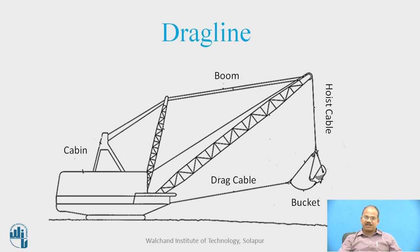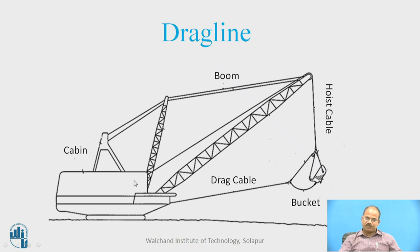This is a construction equipment well known as drag line. It basically consists of a bucket which drops down with the help of a hoist cable connected to the operating cabin. The bucket is also connected with the operating cabin via a drag cable, and the hoisting force as well as dragging force are both operated through the cabin. There is a boom to support these two forms of trusses which form the different parts of a drag line.